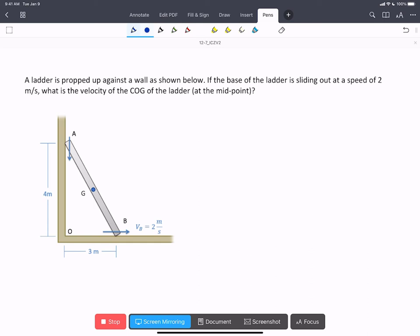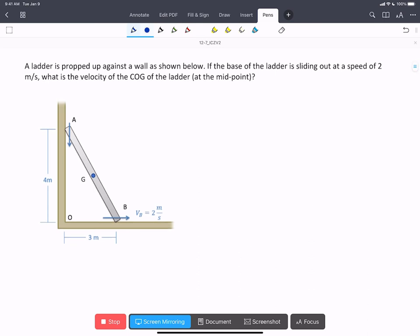In this problem, we have a ladder propped up against the wall as shown below. The base of the ladder is sliding out at 2 meters per second, and we're asked to find the velocity at the center of the ladder, point G.